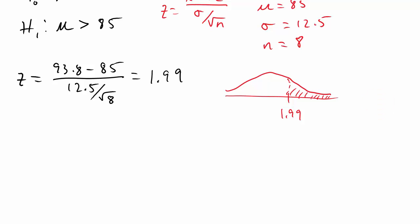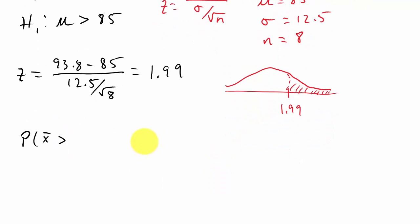So we have the probability that z is greater than 1.99, or we're looking for the probability that x bar is greater than 93.8.